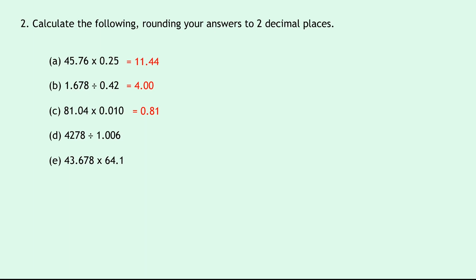Part D says 4278 divided by 1.006, which if you put into your calculator, it should give you 4252.485089. Rounding that to two decimal places it becomes 4252.49. Lastly, Part E says 43.678 times 64.1. If we put that into our calculator, you should get 2799.7598, and if we round that to two decimal places, then we should get 2799.76.